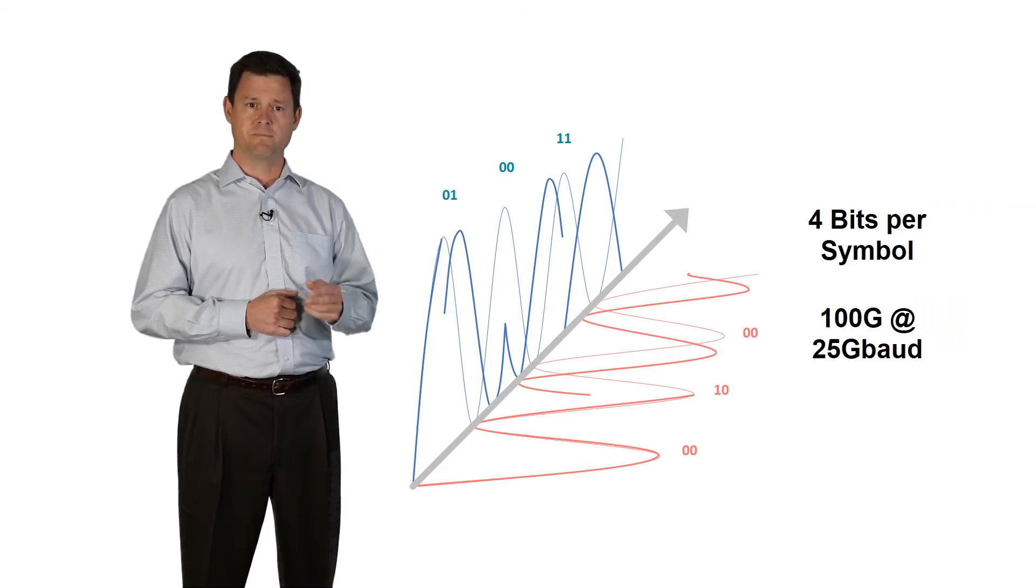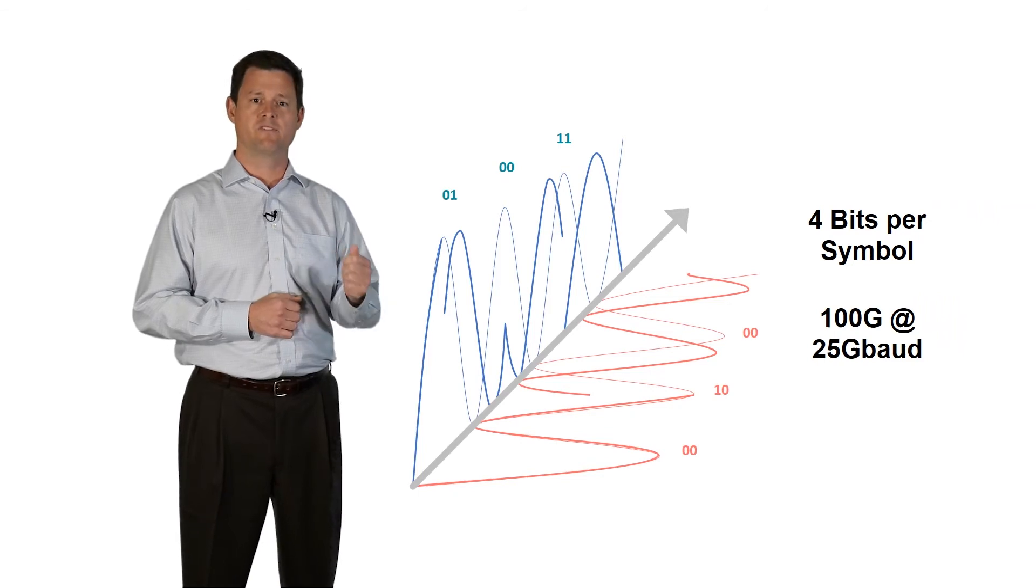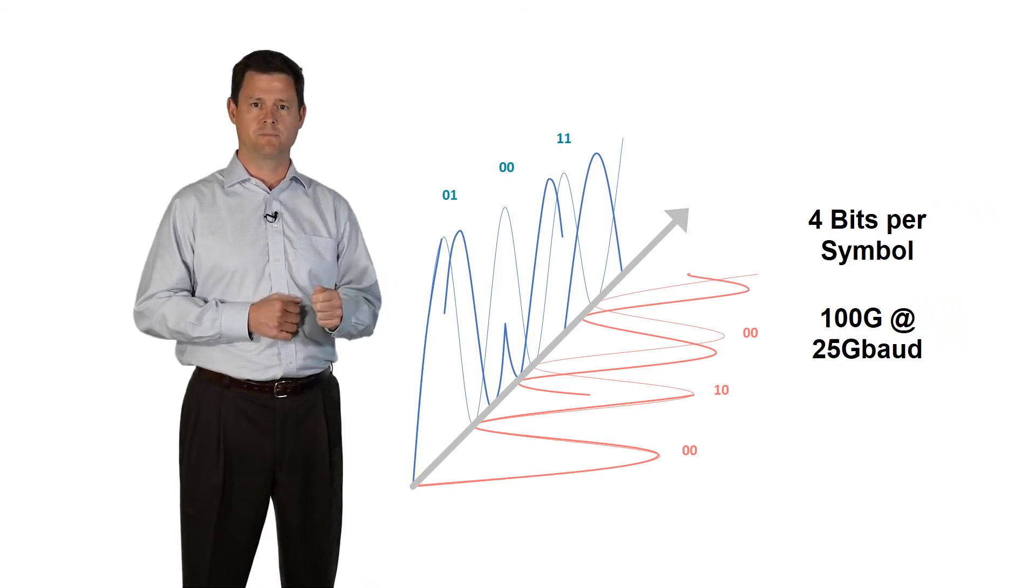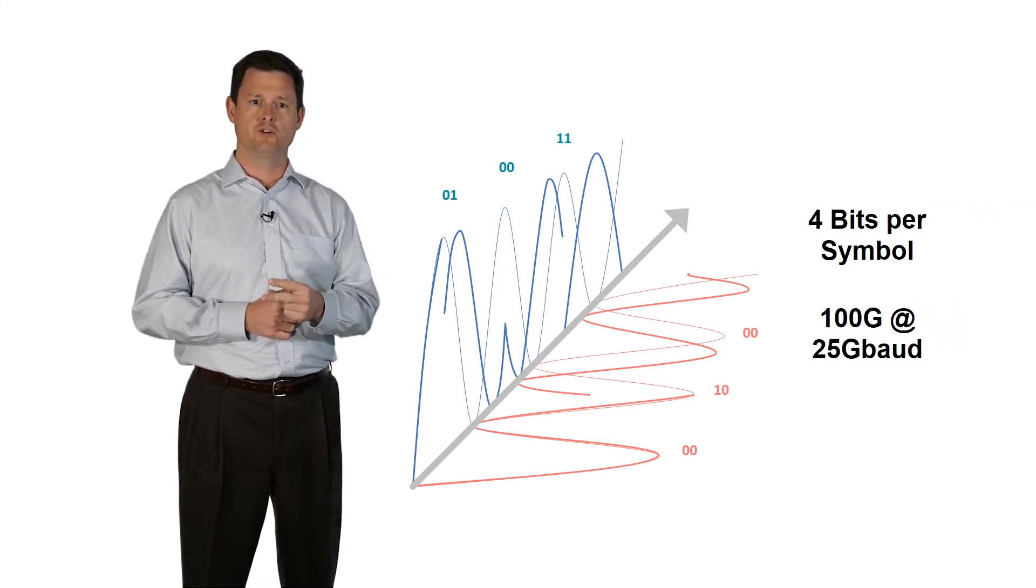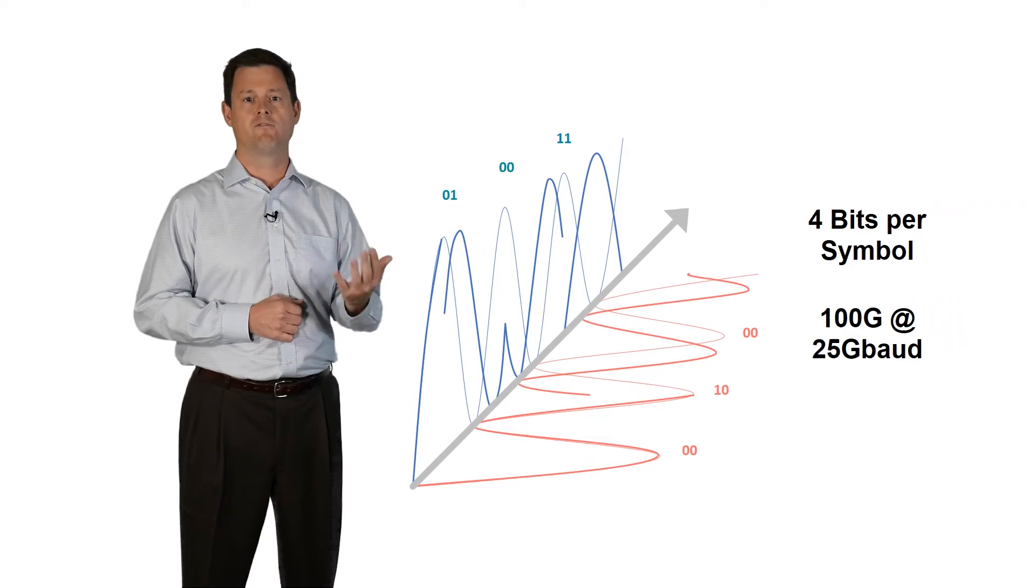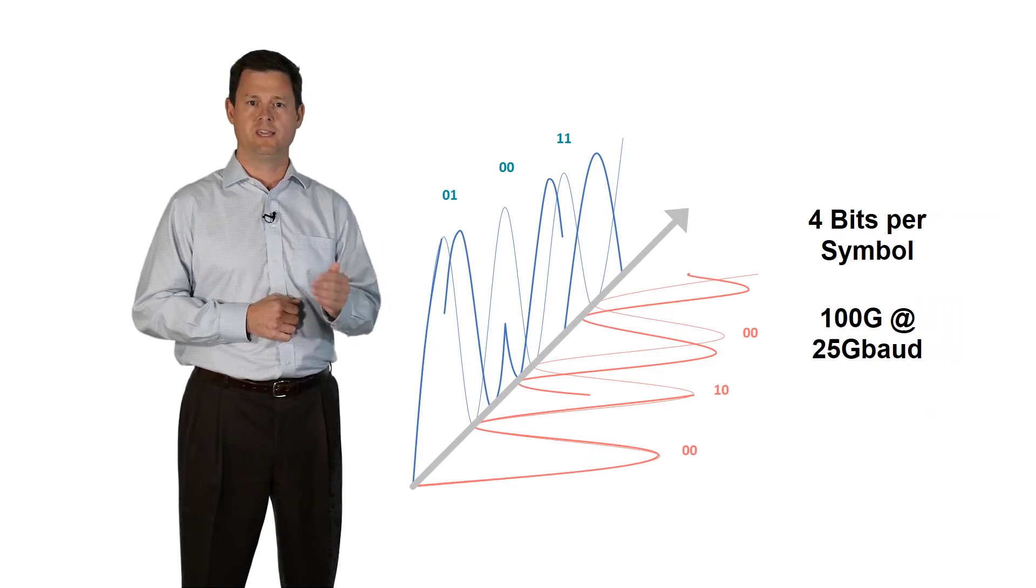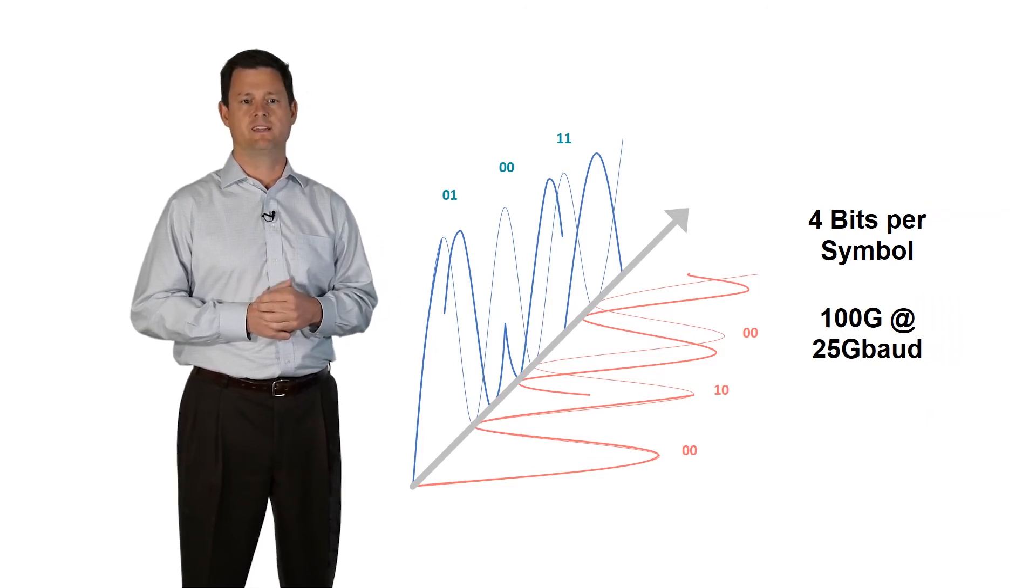As previously mentioned, each QPSK signal provides two bits per symbol, so a polarization mode multiplex QPSK signal will provide two times two bits per symbol, or four bits per symbol. A hundred gig transmissions are achieved by transmitting a PM-QPSK signal at 25 gigabaud.